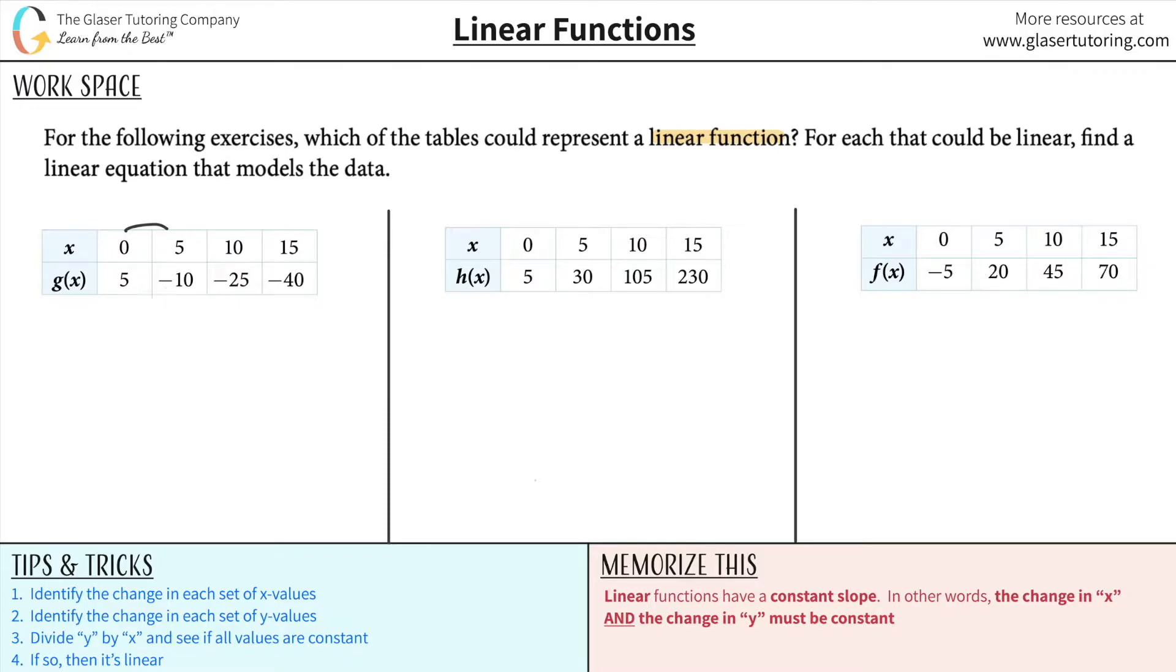Alright, so in order to approach this, what I'm going to do is I'm going to define the changes in x for each three pairs here basically. I'm going to call this one pair, this will be then my next pair, and then this will be my third pair. Okay, so what's the change in x value here between 0 and 5? Well, obviously it's 5, right? How about between 5 and 10? Obviously that's 5. And then 10 and 15, obviously that is 5 again.